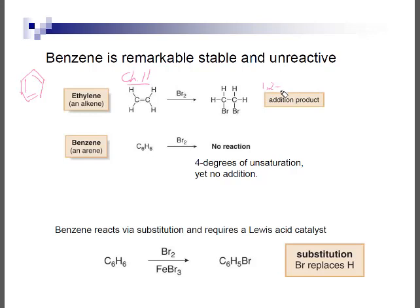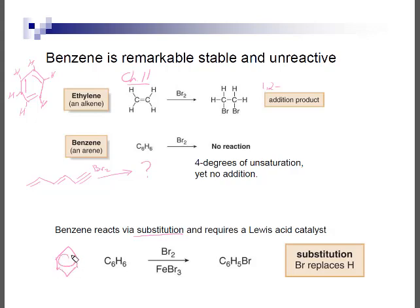If this were cyclic, it would also be anti-addition. Benzene has the chemical formula C6H6, with a hydrogen at each corner. If benzene were like a normal alkene — 1,2,3,4,5,6 carbons with 4 degrees of unsaturation — you'd expect addition. Instead, it reacts via substitution. We substitute a bromine in for a hydrogen, and the inorganic byproduct is hydrobromic acid. This reaction also requires a Lewis acid catalyst, iron(III) bromide.